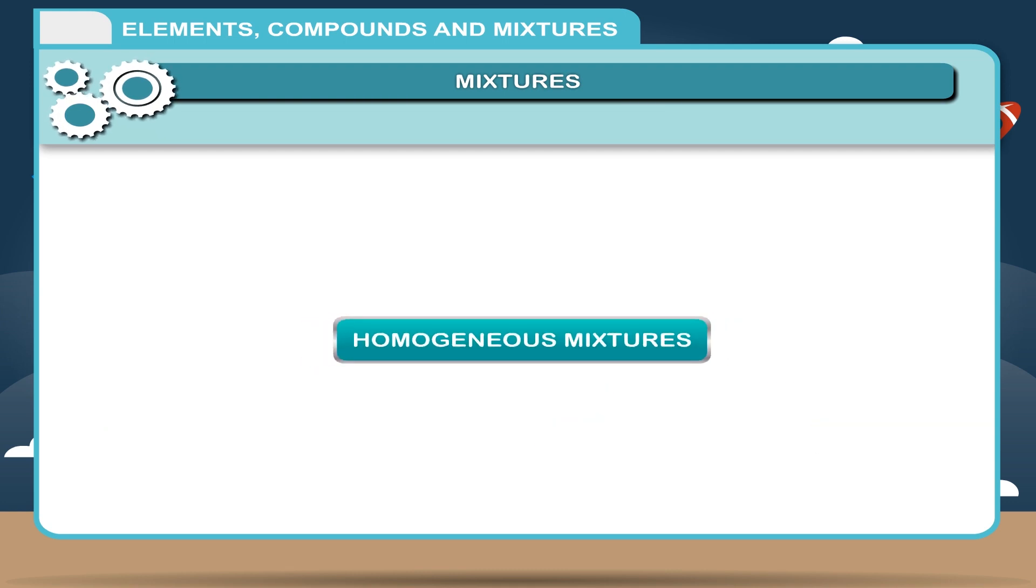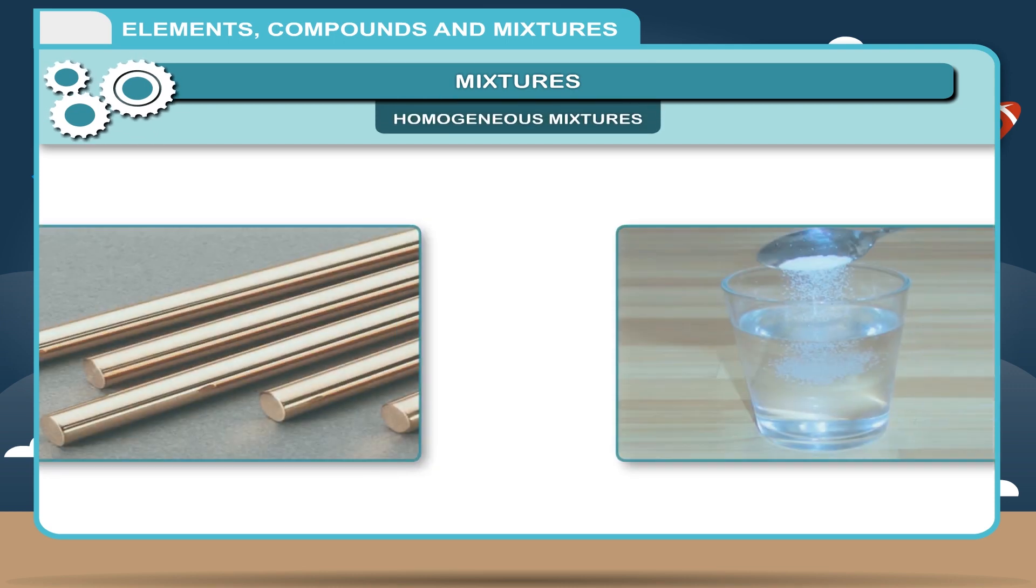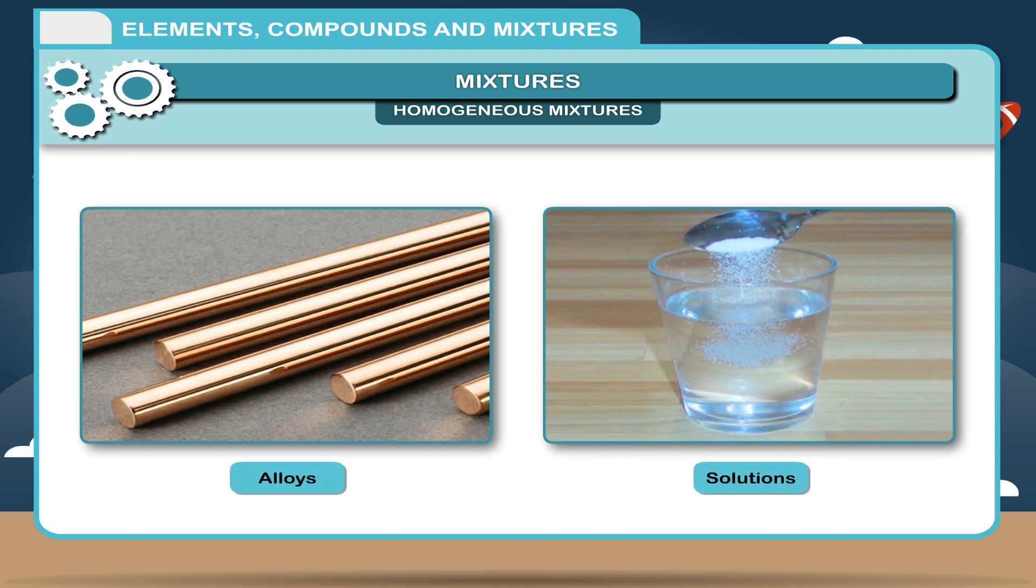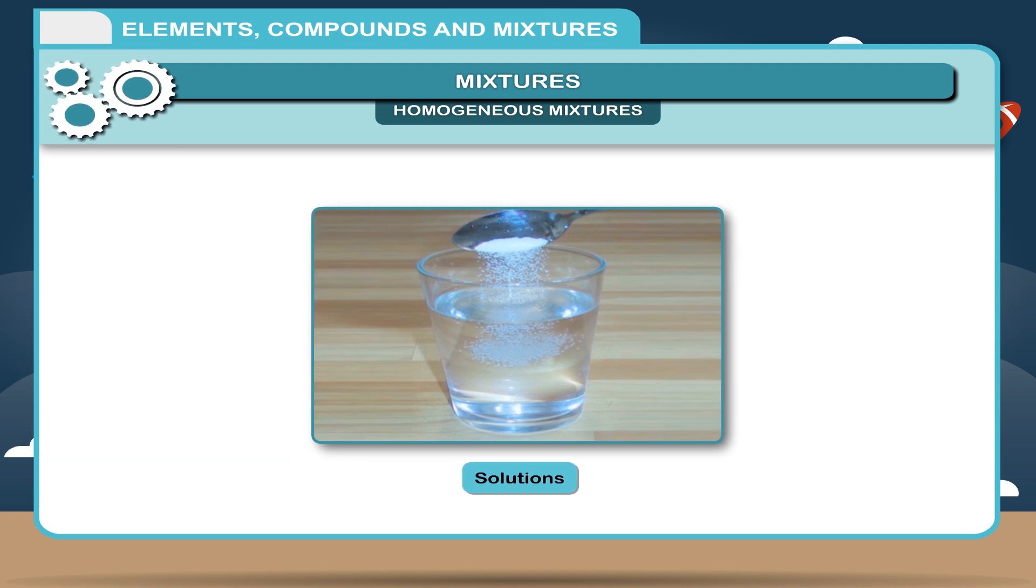Homogeneous mixtures: In a homogeneous mixture, the components are mixed together completely. It has a uniform composition and properties throughout the mixture. Alloys and solutions are examples of homogeneous mixtures. A mixture of salt and water is an example of a homogeneous mixture.